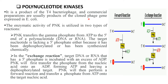Polynucleotide kinase (PNK) is a product of T4 bacteriophage, and commercially available preparations are usually a product of a cloned phage gene expressed in E. coli. The enzymatic activity of PNK is utilized in two types of reactions. The first is the forward reaction, where PNK transfers the gamma phosphate from ATP to the 5' end of the polynucleotide — it could be either DNA or RNA.